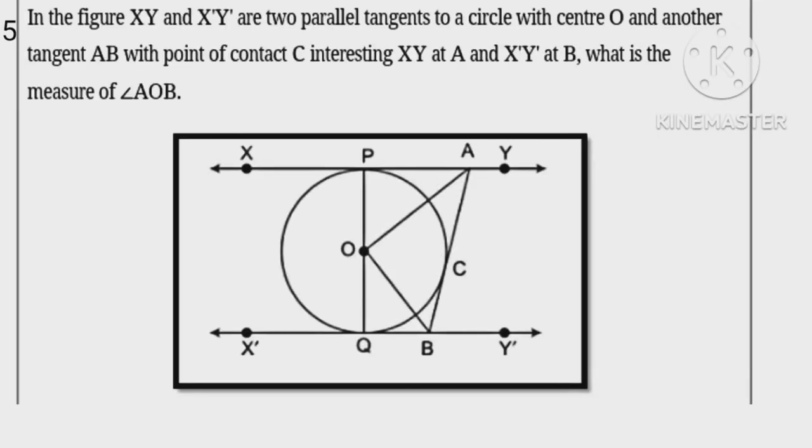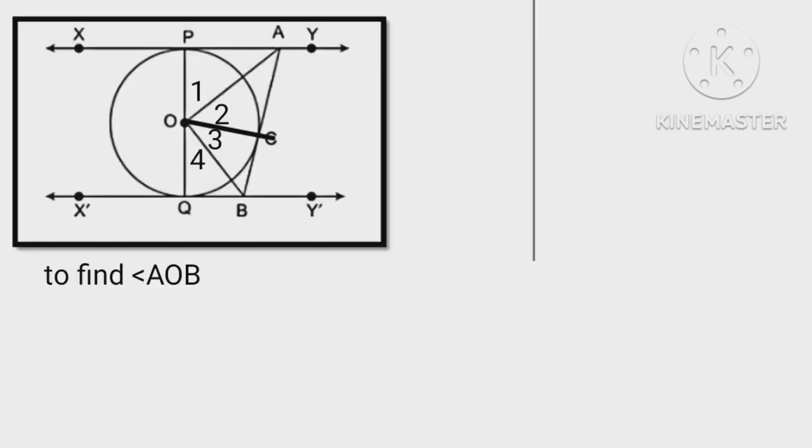Read the question carefully first. To find angle AOB, join CO, AO and OB. In triangle APO and ACO, AP equals AC (equal tangents), AO is common, OP equals OC (radii of circle).